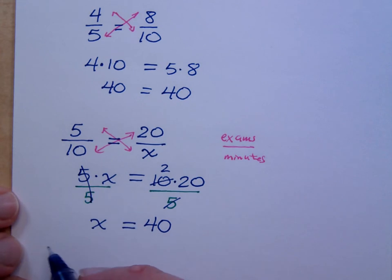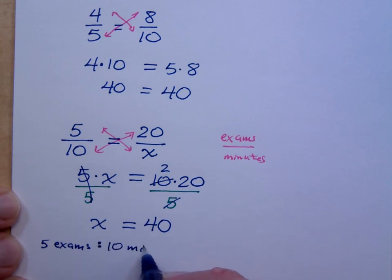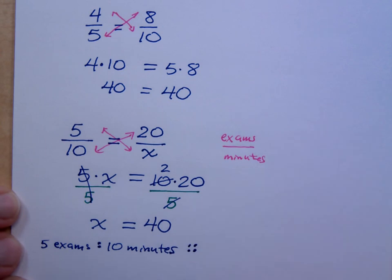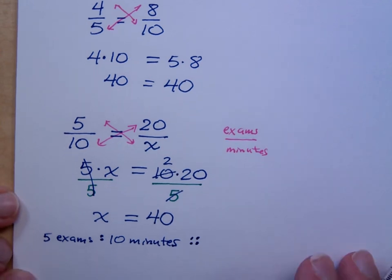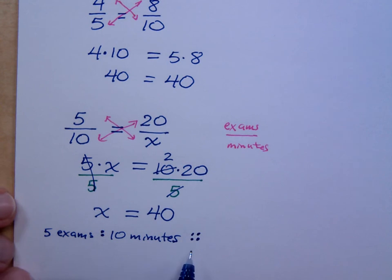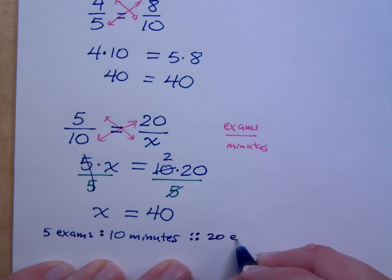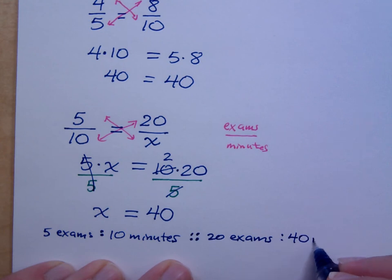So looking back up here, 5 exams for every 10 minutes, and we do proportions sometimes we do this, so like the first colon right here is that first rate, 5 exams to 10 minutes is equal to or is equivalent to 20 exams for how many minutes? And it's 40 minutes, so that answers the question, how long would it take? It would take 40 minutes.